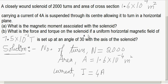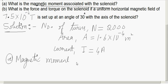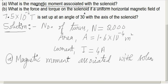The solenoid is suspended freely such that it can turn in a horizontal plane. The first question is: what is the magnetic moment associated with the solenoid? The magnetic moment associated with the solenoid can be calculated directly. The formula is M equal to N into I into A.